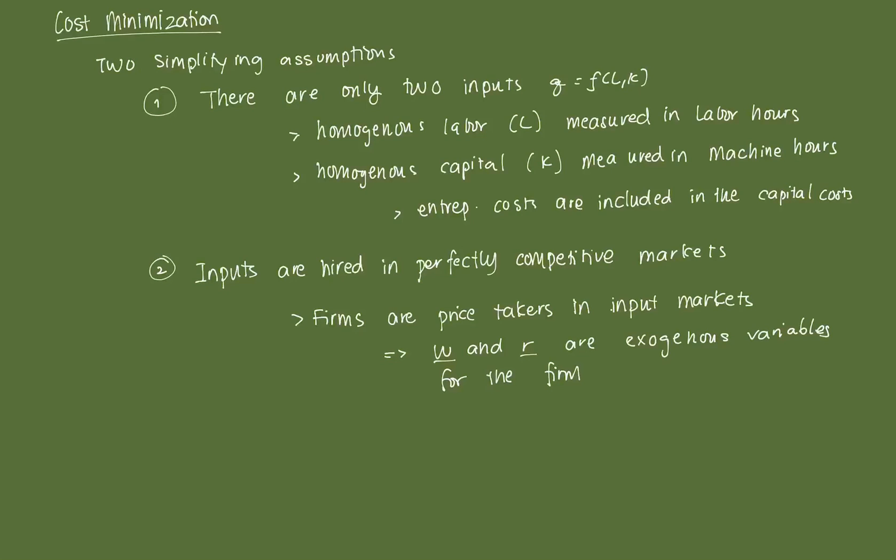So we believe that a firm has the ability to be able to minimize its costs. And there are things that in the process of minimizing costs that it has to take as given. So we'll make two simplifying assumptions that make the procedure for cost minimization a bit more painless. So the first of which is that we assume, as in any case that we've had before, that we are given with a production function with only two inputs.